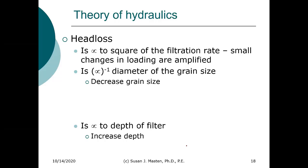Head loss is proportional to the square of the filtration rate or approach velocity, so small changes in approach velocity are amplified in terms of head loss. It's inversely proportional to the grain size diameter — decrease the grain size and head loss increases. It's also proportional to the depth of the filter — increase the depth and head loss increases.